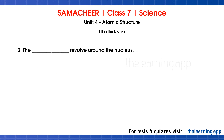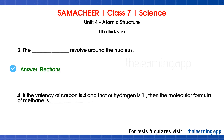Third question: the dash revolves around the nucleus. Correct answer is electrons — electrons revolve around the nucleus. Fourth question: if the valency of carbon is 4 and that of hydrogen is 1, then the molecular formula of methane is dash. Correct answer is CH4.